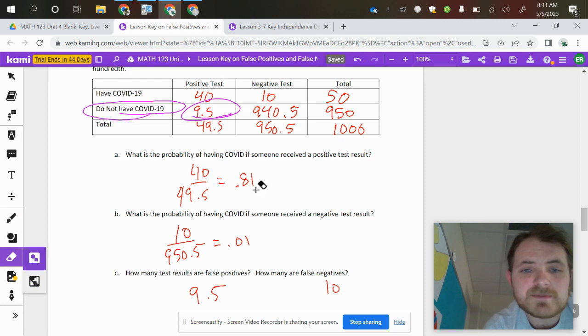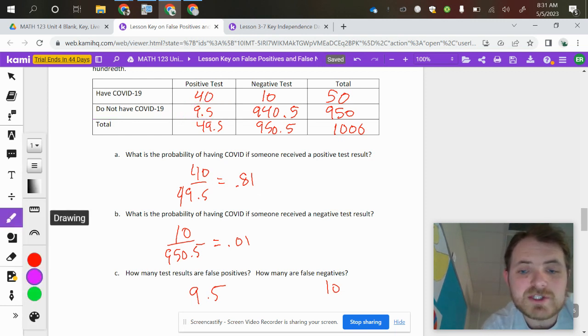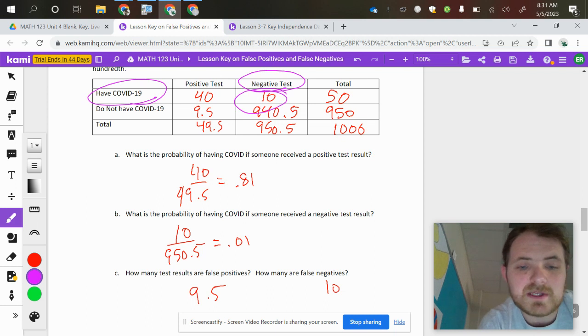And somebody who, a false negative would mean that you are testing negative, but you do have COVID. So that's not great. So if you have COVID, but you have a negative test, that would be 10 total people.